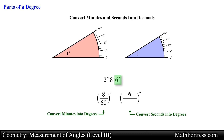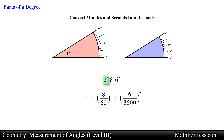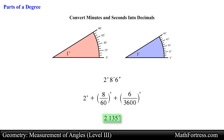We need to be careful here. We know that 1 minute equals 60 seconds, but since we want to convert seconds into degrees, we need to figure out how many seconds are in 1 degree. Since 1 minute equals 60 seconds and 1 degree equals 60 minutes, then 1 degree equals 60 times 60, or 3600 seconds. So we convert the 6 seconds into degrees by dividing by 3600. Then we add the degree measure along with these two fractions. Using a calculator, we obtain 2.135 degrees.